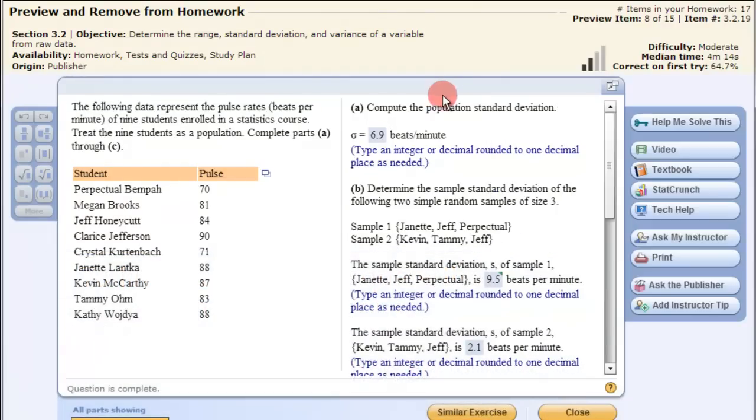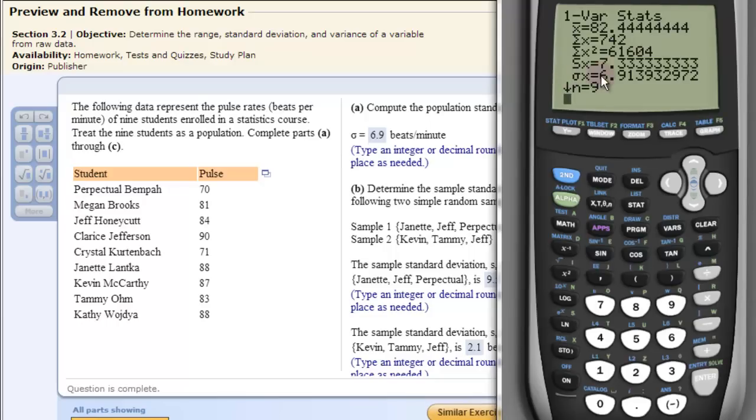So the first question was compute the population standard deviation, 6.9 sigma. That would be this portion right here.